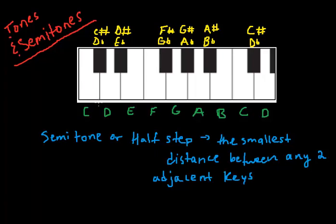And this could be between black and white or white and white either way. So for example, between C and C sharp, or that would be a semitone. Examples would be between E and F is a semitone, between B and C is a semitone, and between D and D sharp.